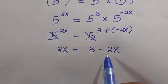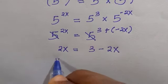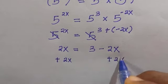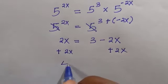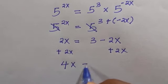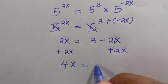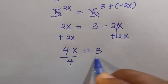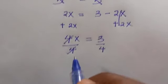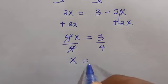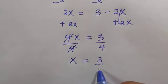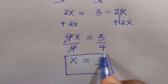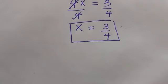Let's collect the like terms by adding 2x to both sides. We get 2x plus 2x equals 4x, and the 2x on the right cancels, leaving 4x equals 3. Dividing both sides by 4, we get x equals 3 divided by 4. That is the answer for the first method: x equals 3 over 4.